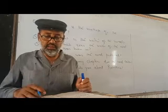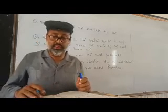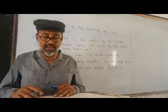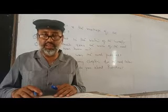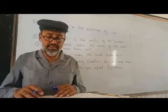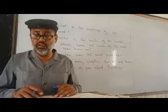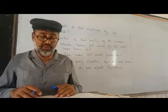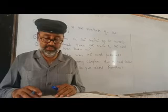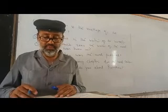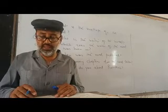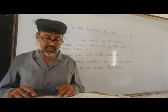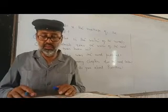Question number nineteen: Who persuaded Rudolf Rassendyll to impersonate as the king of Ruritania? Question number twenty: Why is Rudolf Rassendyll compelled to impersonate as the king of Ruritania? Give reasons. Question number twenty-one: Why does Rudolf Rassendyll travel to Ruritania? Question number twenty-two: What makes an amazing resemblance between Rudolf Elphberg V and Rudolf Rassendyll? Question number twenty-three: What makes Rudolf Elphberg V insensible? Question number twenty-four: What motive has Black Michael to get the king unconscious? Question number twenty-five: Who is Joseph?